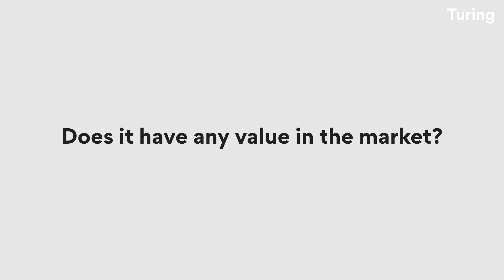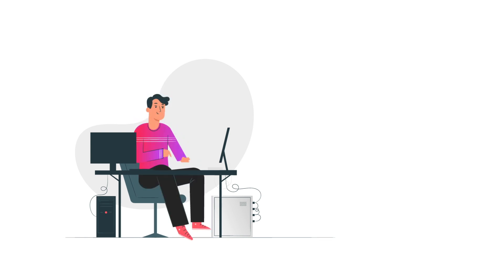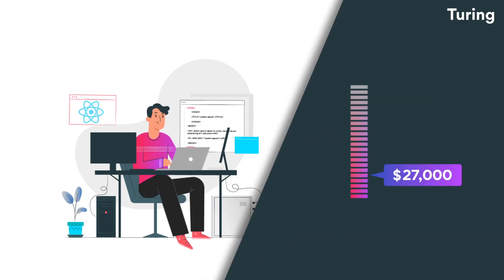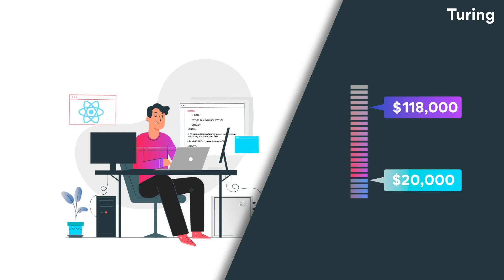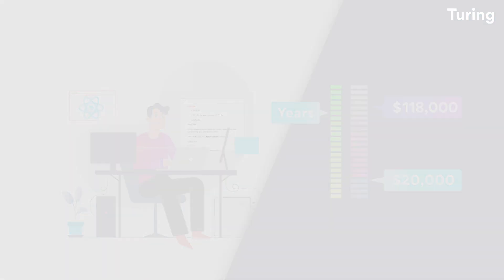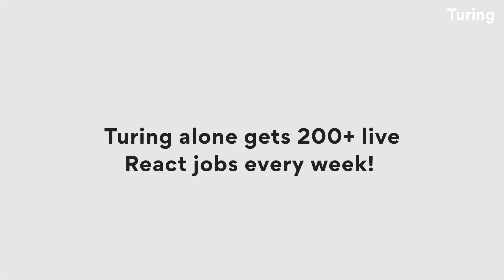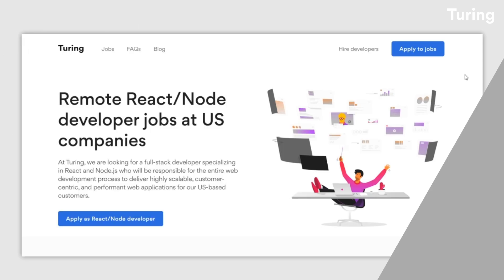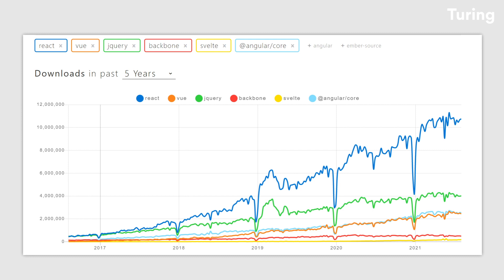Companies using React include Yahoo, Netflix, PayPal, IMDb, Uber, Wix, Atlassian, Cloudflare, Slack, Dropbox, Salesforce, Airbnb, Reddit, BBC, and the list goes on. Does it have value on the market? Yes — according to a survey by Relevant, React devs earn anywhere between $27k and $118k with a base pay of $20k, depending on years of experience. The number of React.js jobs is abundant — Tutoring alone gets more than 200 live React.js jobs every week. And apparently Angular was the most popular framework back in 2016, but today React.js has twice as much popularity as Angular.